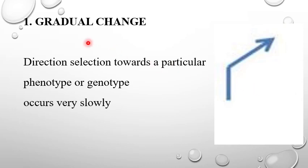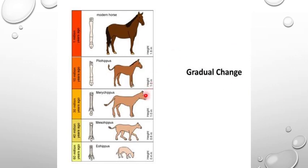I will discuss about the number one pattern that is the gradual change. It is directional selection towards a particular phenotype or genotype and it occurs very slowly. In this diagram, you can see that the ancestors of modern horses are the Eohippus which are about the size of a normal dog and they were present 60 million years ago. Now they became extinct. And you can see that the modern horses have evolved and gained the size of about 10 times bigger than the ancestors known as Eohippus. This evolution process takes place through gradual change. It is not a rapid process.